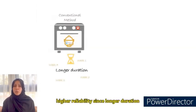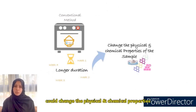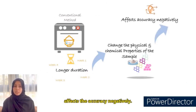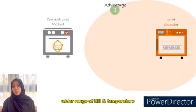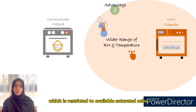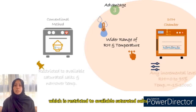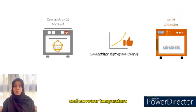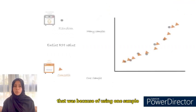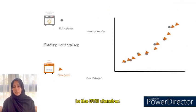Higher reliability, since the longer duration in the conventional method could change the physical and chemical properties of the sample, consequently affecting accuracy negatively. A wider range of relative humidity in the chamber, in contrast to the conventional method which is restricted to available saturated salts and narrower temperature. A smoother isotherm curve was observed with the new method, unlike the older one, because one sample is used for the entire range of relative humidity in the DTH chamber.